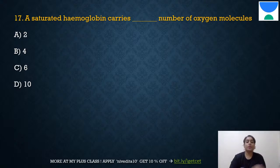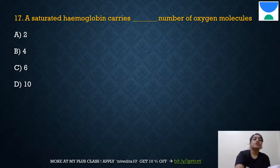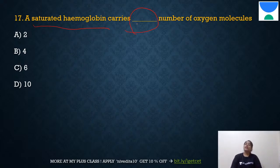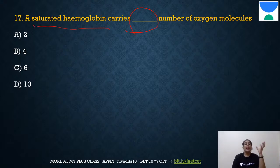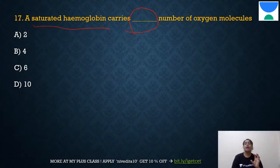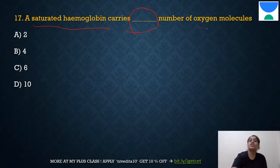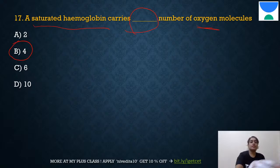Question 17: Saturated hemoglobin carries how many molecules of oxygen? Saturated means maximum capacity is reached — no more can be added. In case of hemoglobin, the maximum number of oxygen molecules it can bind is four. The answer is B: four molecules.